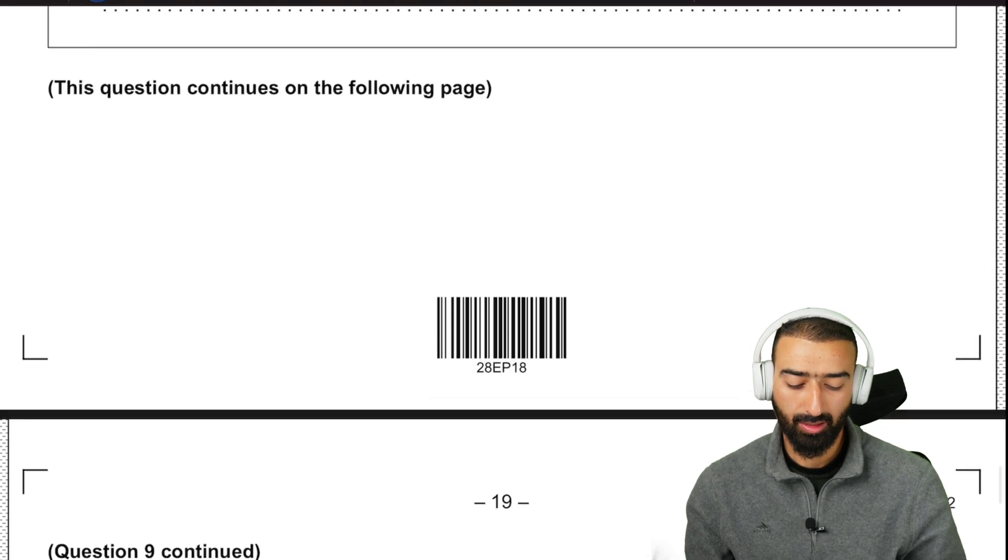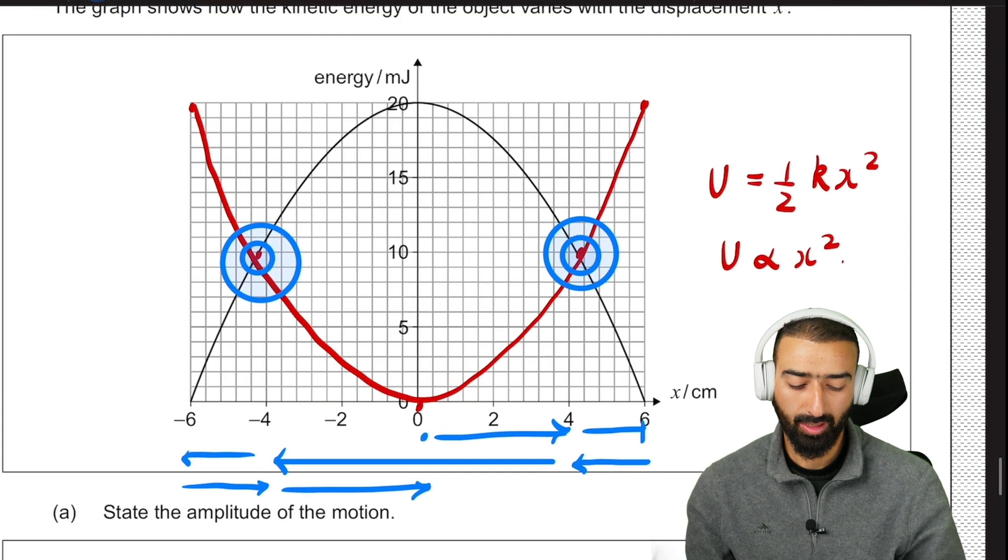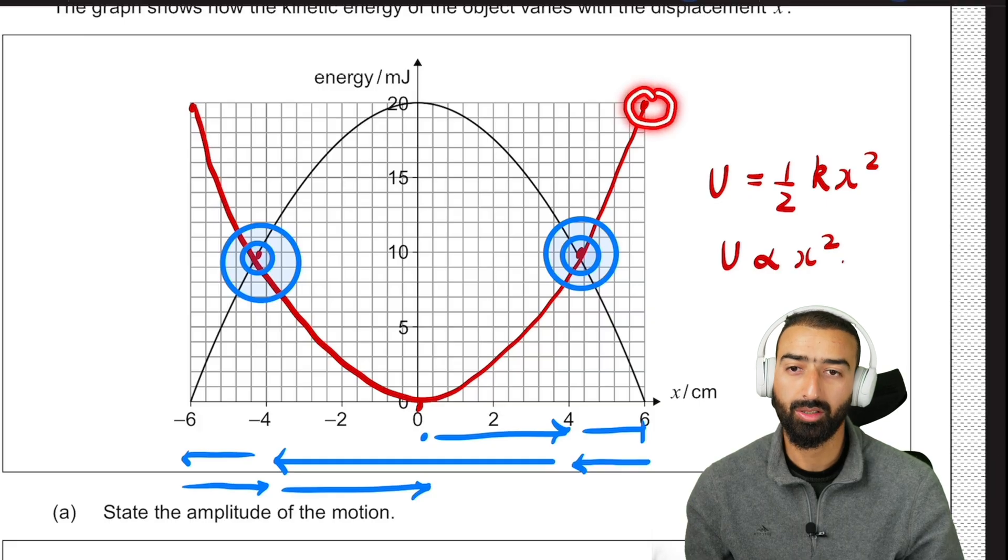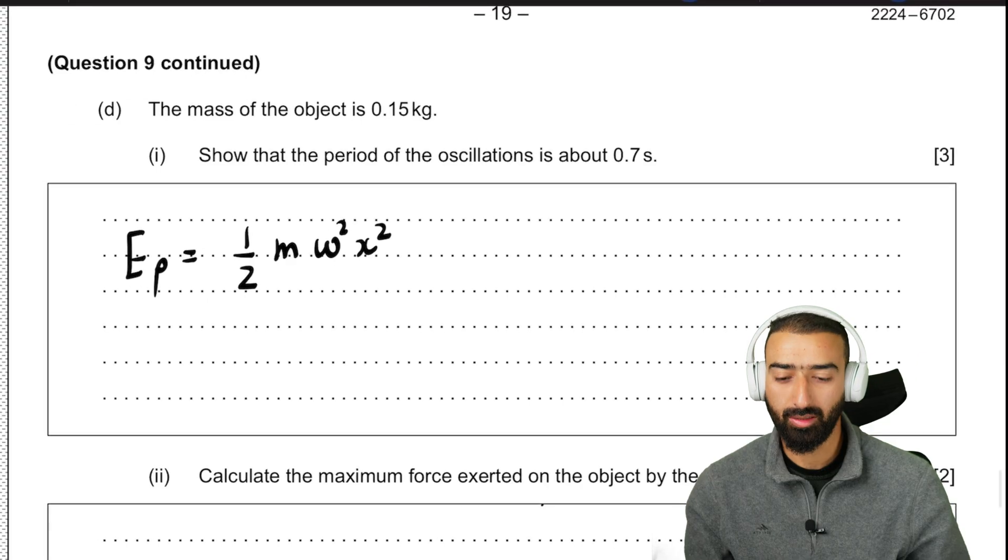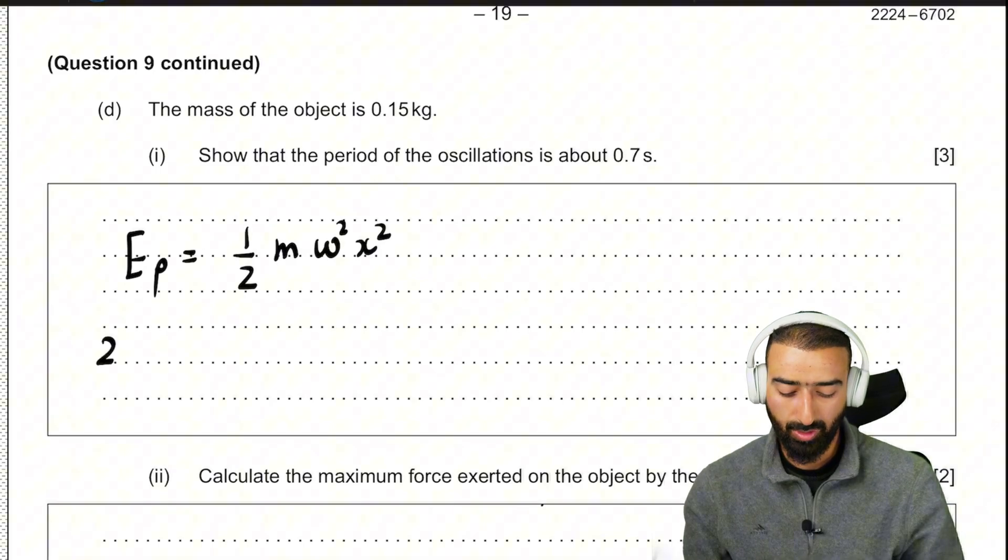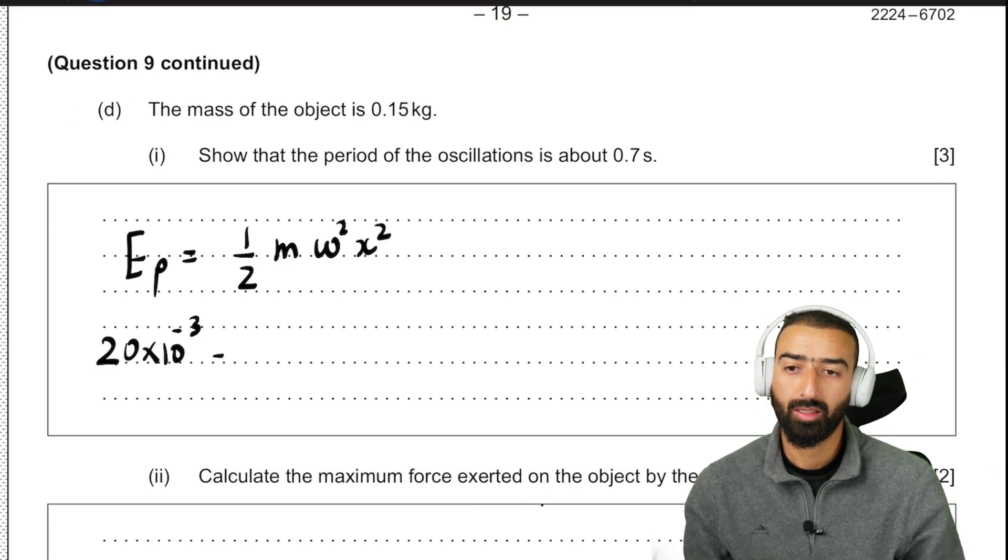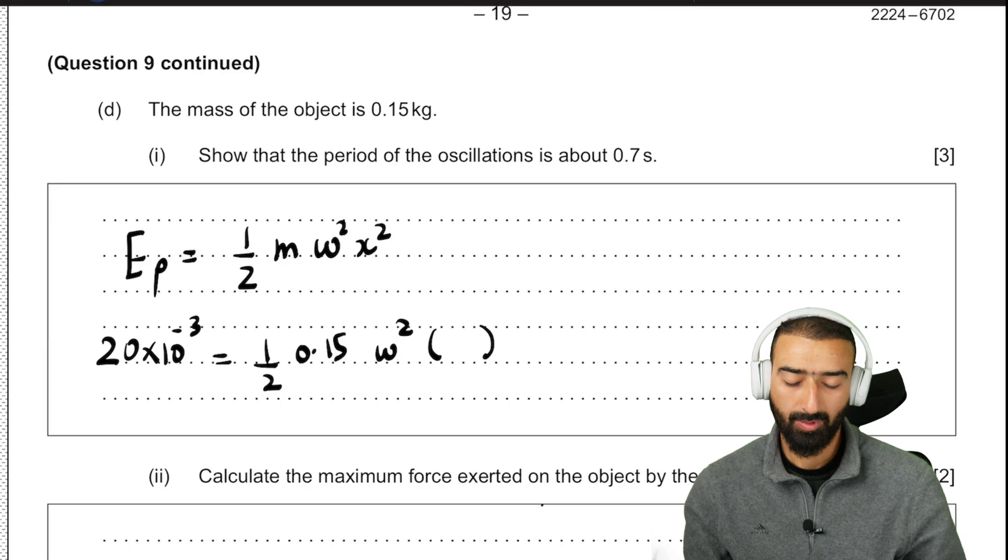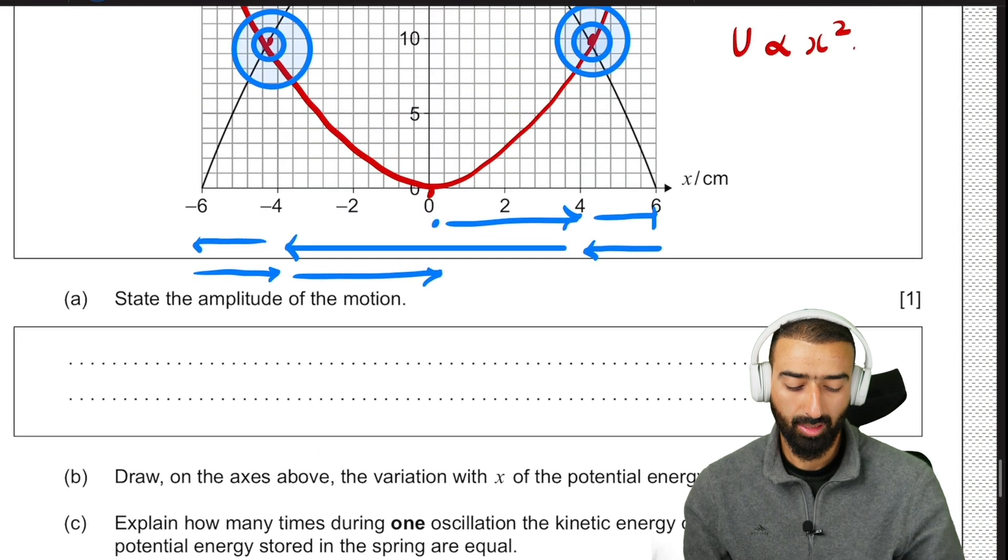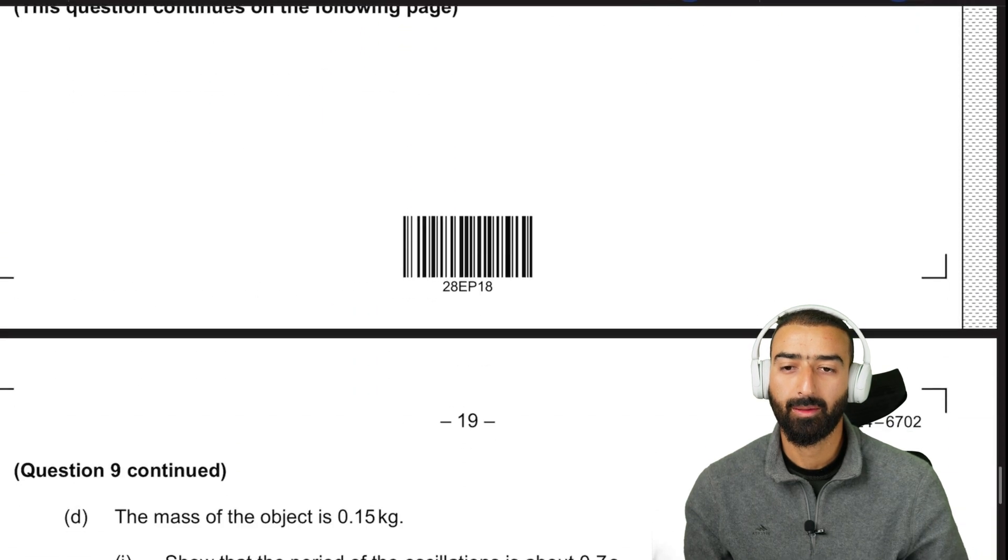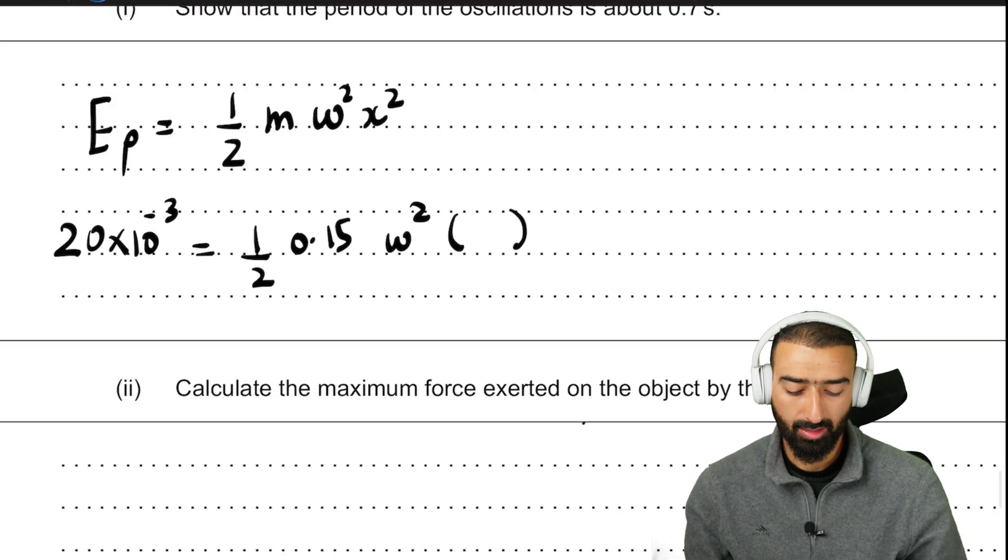And if you look at this plot here, you'll realize that the maximum potential energy is 20 millijoules. So we can substitute back it here. 20 millijoules equals half the mass is 0.15 times omega square times the amplitude square. The amplitude is 6 centimeters. So let's plug that here. 0.06 square.